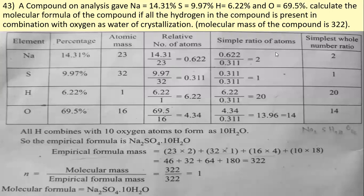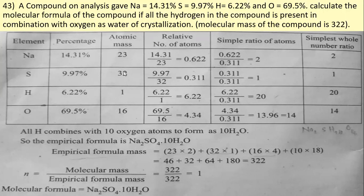Here also we tabulate the given data. The elements are sodium, sulfur, hydrogen, and oxygen. Their atomic masses are: sodium 23, sulfur 32, hydrogen 1, and oxygen 16. The relative number of atoms is again calculated as percentage divided by atomic mass.